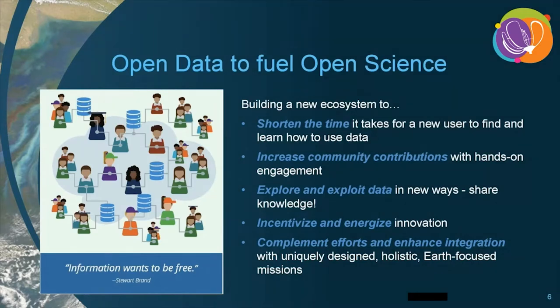Within NASA's Earth Science Data Systems, open source science serves as the foundation of the program — that is the open sharing of data, information, and knowledge within the scientific and application communities and the wider public, so that we can accelerate scientific research and understanding around the world. NASA open data policies are helping break down barriers to using NASA Earth Science data and foster a more collaborative, inclusive scientific process open to anyone, regardless of background, ethnicity, gender, or geographic location. Our activities support the open source, open science ecosystem and its four principles.